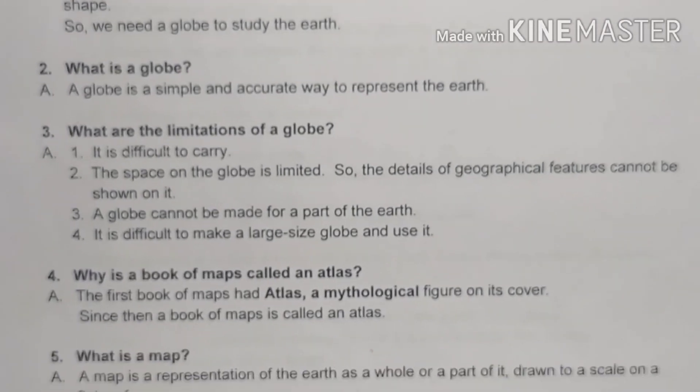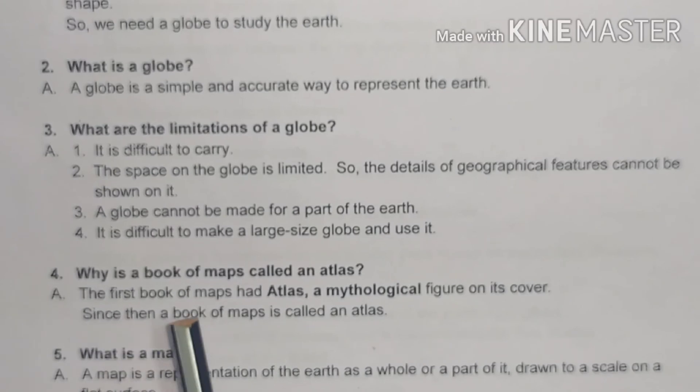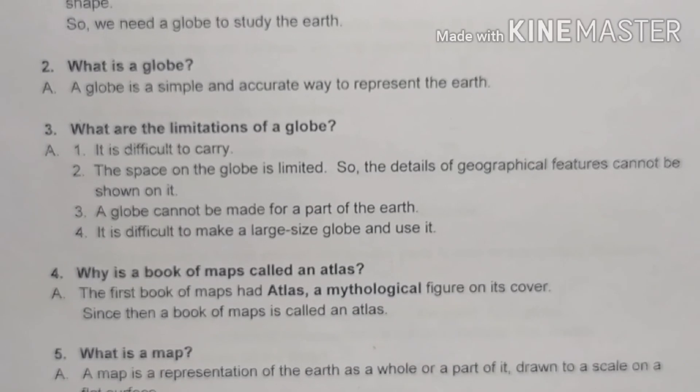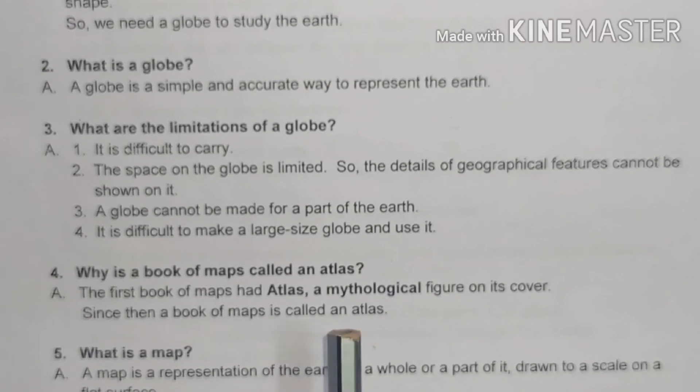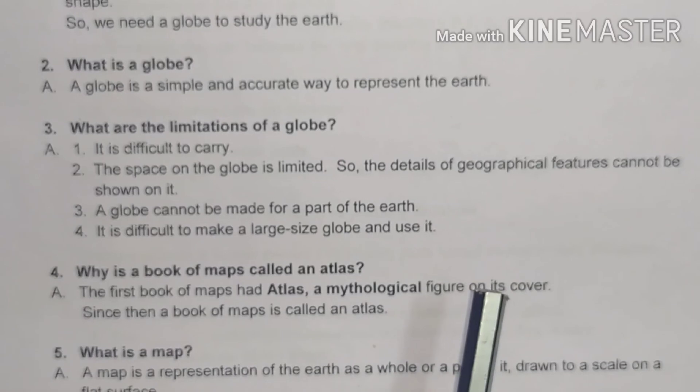Fourth question: why is a book of maps called an atlas? The first book of maps had Atlas — a mythological figure — on its cover. Since then, a book of maps is called an atlas, as it had the figure of Atlas on it.